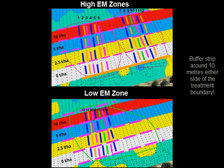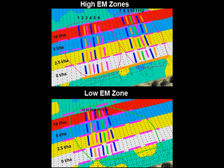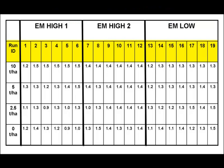We then extract the data points inside this area within each run line and each treatment strip. When you snip out this data, you can record it in a table by its run line, its treatment, its EM zone, and its resulting yield.